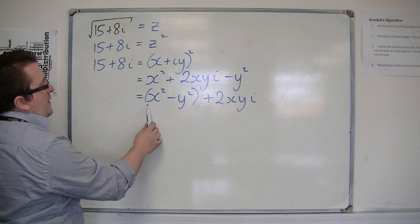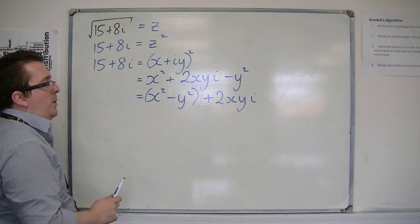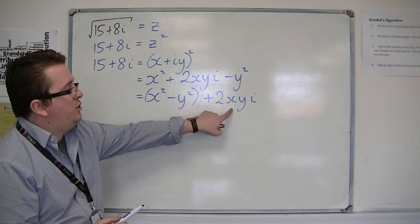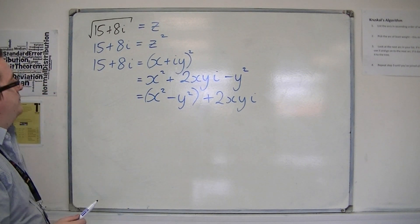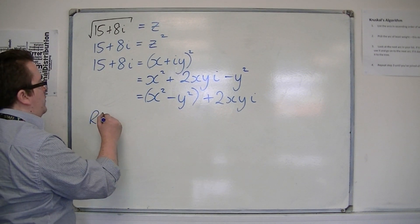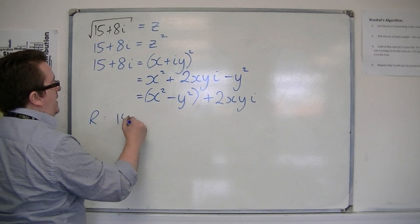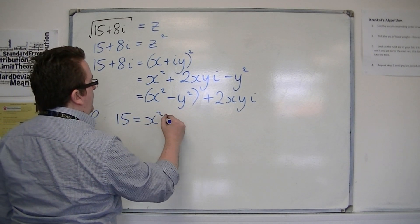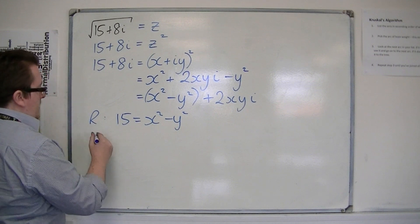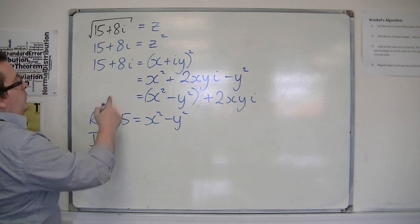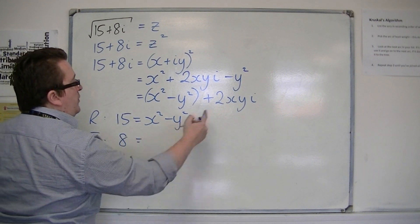So it has this real part, the x squared minus y squared, and the imaginary part, 2xyi. So if I equate the real parts, that's saying that 15 is equal to x squared minus y squared, and the imaginary parts would be 8 is equal to 2xy.